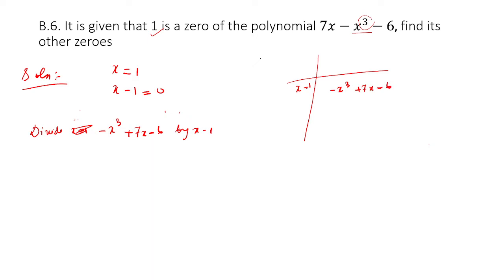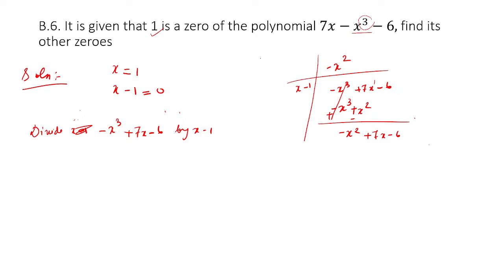What should you multiply x by in order to get minus x cubed? Obviously it is going to be minus x squared, because when you multiply x with minus x squared you get minus x cubed. Minus into minus becomes plus, 1 into x squared becomes x squared. This becomes plus, this will become minus — cancelled out, bring down minus x squared. You cannot subtract 7x with x squared because they have different degrees — degree 1 and degree 2.